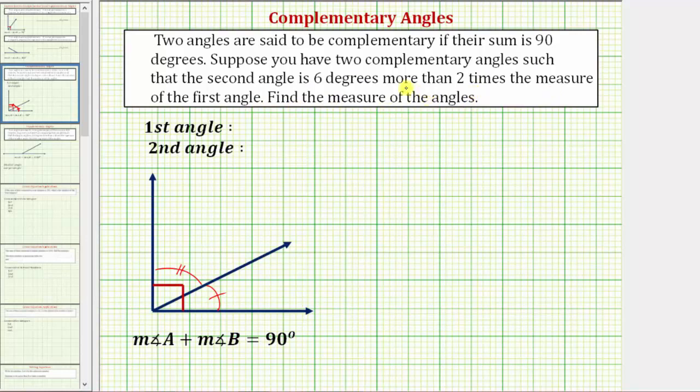So because we don't know the measure of the first angle, let's let the first angle be equal to x degrees.